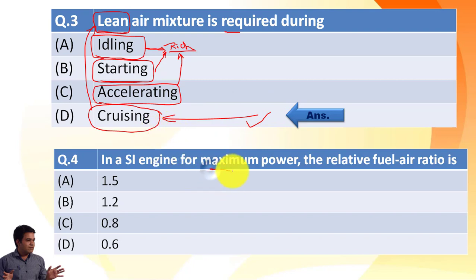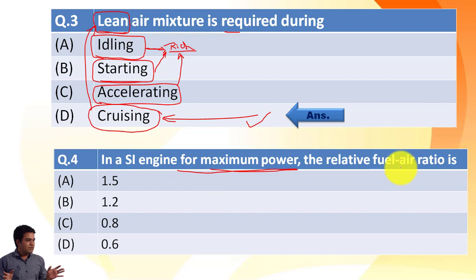The next question: in an SI engine, for maximum power, the relative fuel-air ratio is — we have four options: 1.5, 1.2, 0.8, and 0.6. The correct answer is 1.5.